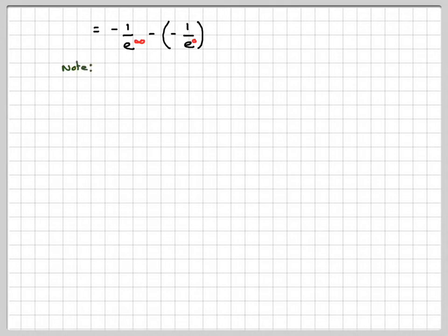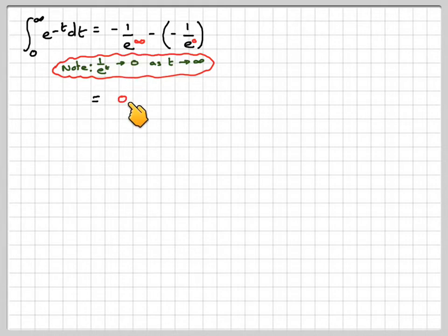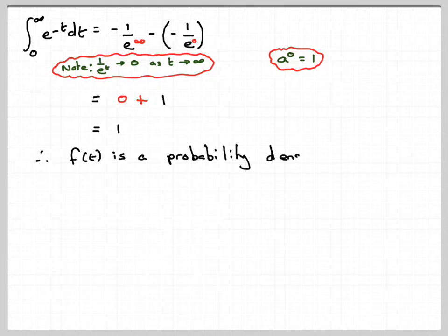So this will become zero. So this first bit here will be zero. Minus minus is a plus. And then e to the zero, a to the zero is one, so we get one over one, which is one. So zero plus one is one. So if that's true, f of t is a probability density function.